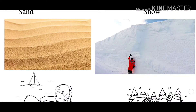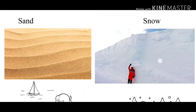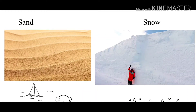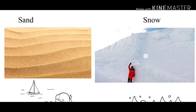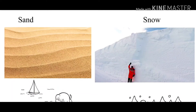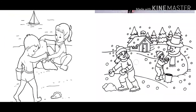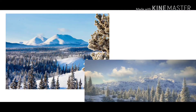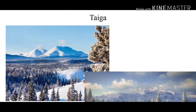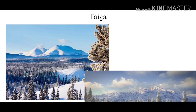In places that are really cold, you can find a lot of snow. This is what we call snow. Snow is a lot of fun to play in. One place that is really cold, we call a taiga. A taiga gets a lot of snow.